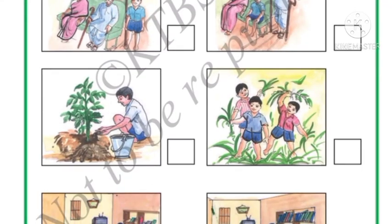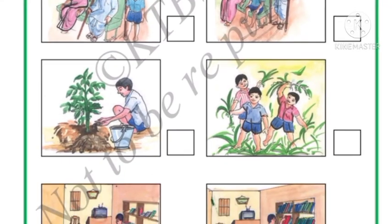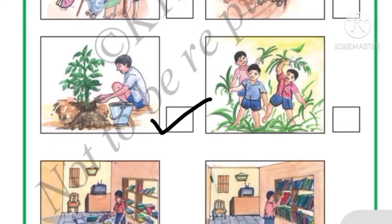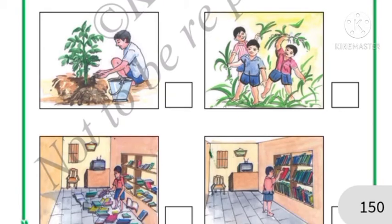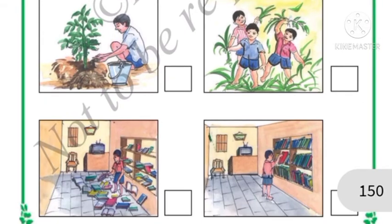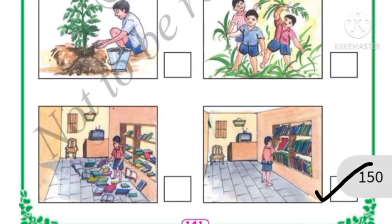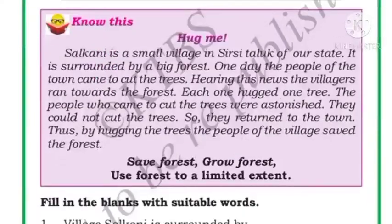Then: planting trees or destroying trees — planting trees, so we put a tick mark there. Then: destruction of books or arranging books — of course arranging books, so we put a tick mark there.